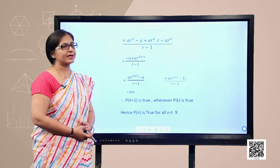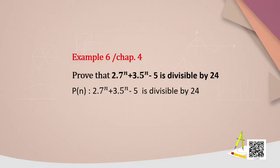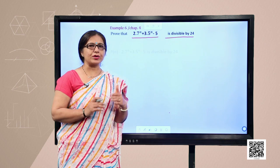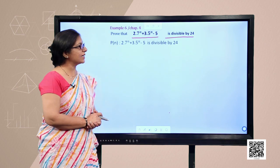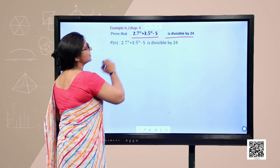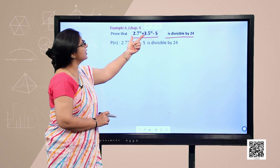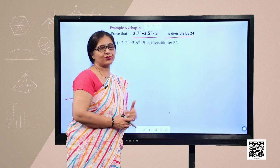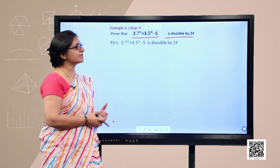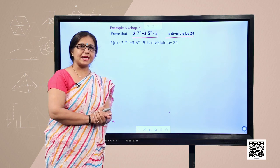Now we move on to another example — example 6 of your exercise chapter 4 — where we need to prove that 2·7ⁿ + 3·5ⁿ − 5 is divisible by 24. This statement is different from earlier ones because there is no equality sign; we need to prove divisibility. There is a slightly different approach, but the basic steps remain the same.